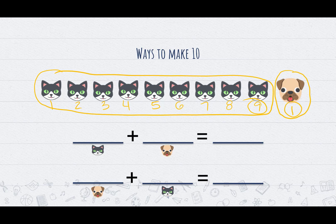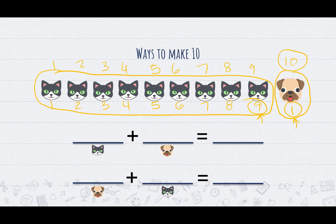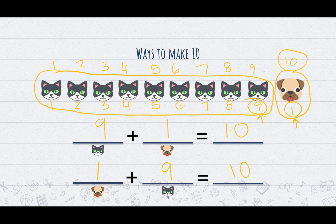Now I'm going to count how many I have all together: 1, 2, 3, 4, 5, 6, 7, 8, 9, 10 all together. This is my second way of making 10 — a group of 9 and a group of 1 makes 10. So 9 cats plus 1 dog equals 10, and 1 dog plus 9 cats equals 10. So 9 plus 1 equals 10 and 1 plus 9 equals 10.